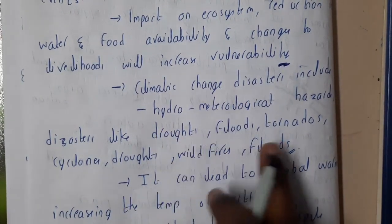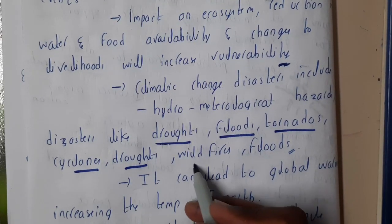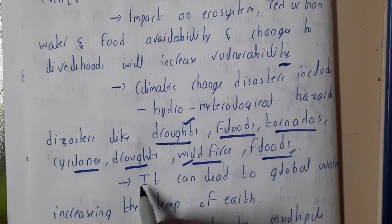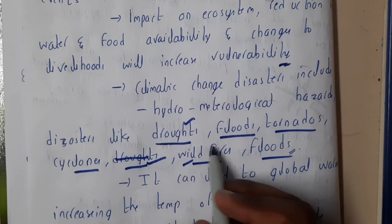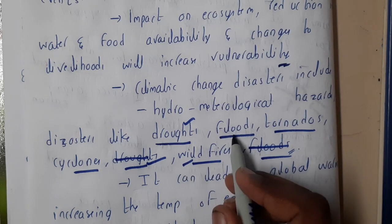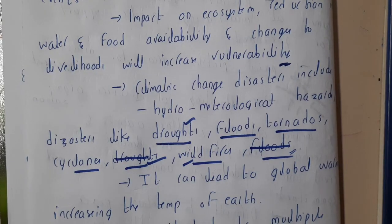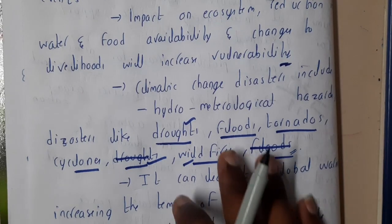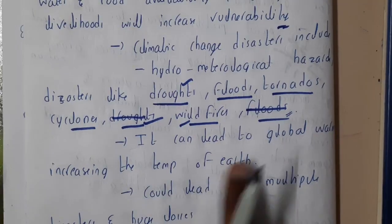The disasters may include droughts, floods, tornadoes, cyclones, and wildfires. Droughts and wildfires occur when the temperature is high, while floods and cyclones occur when there are heavy rains. These are the common climate-related disasters, as they are completely depending on the climate.